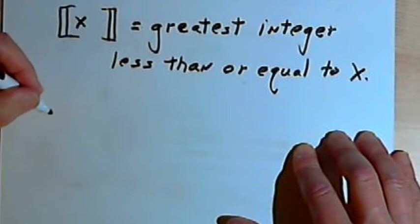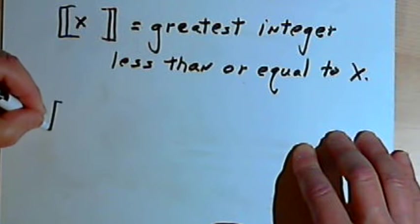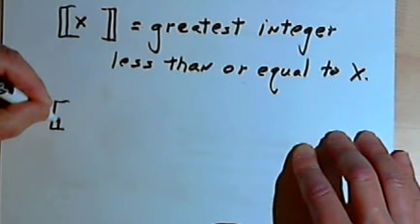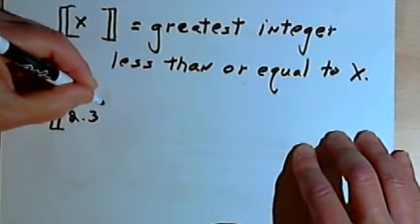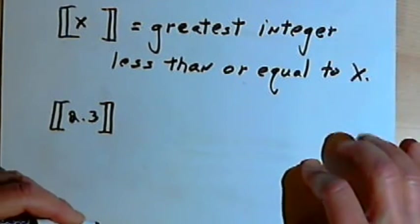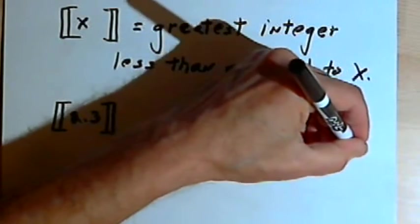So let's try some numbers in here and see how this works. Let's say I've got the greatest integer value for 2.3. Now I'm going to explain this with a number line.